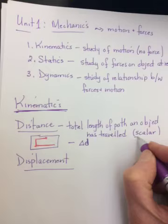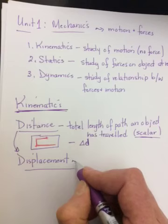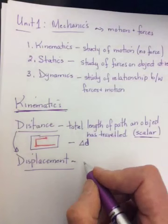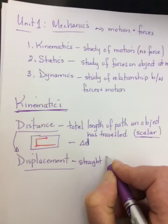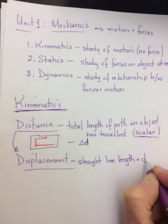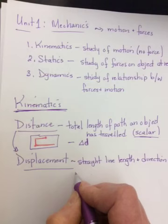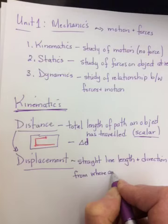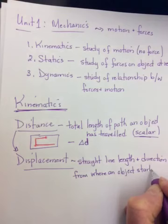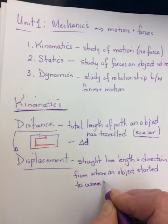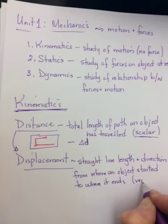Its counterpart in the vector world is called displacement. Displacement is the straight line length and direction from where an object started to where it ended up. It is a vector. The hint for that being the word direction.